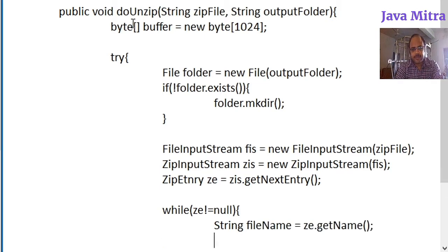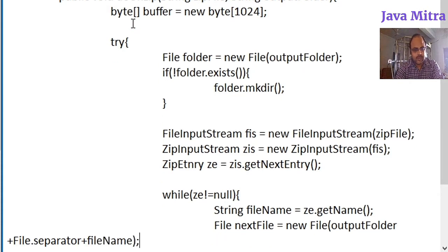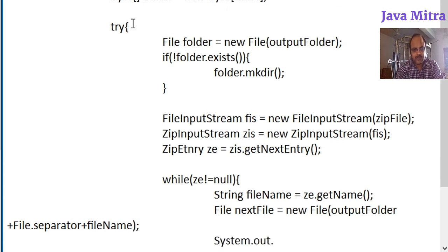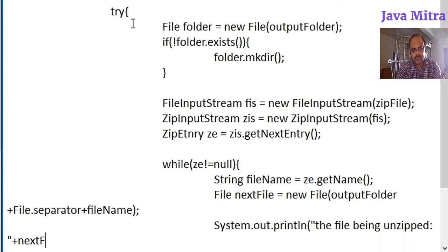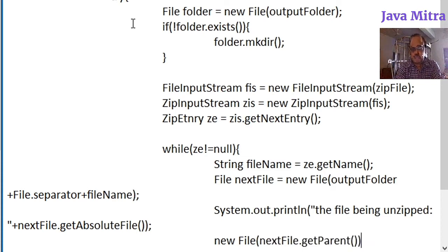Inside the loop, first we get the file name, then we need a File object with its path. I am displaying the path using println — 'The file being unzipped: nextFile.getAbsolutePath()' — so this will show which file is going to be unzipped with its proper path.